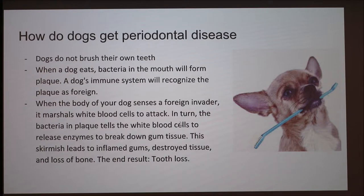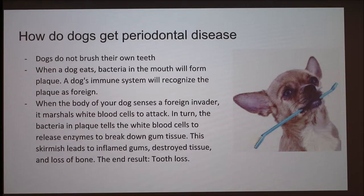How does your dog get periodontal disease? Our dogs don't brush their own teeth like we do. When a dog eats, the bacteria in the mouth will form plaque, and your dog's immune system will recognize the plaque as foreign. When the body senses a foreign invader, it marshals white blood cells to attack. In turn, the bacteria in plaque tells the white blood cells to release enzymes that break down the gum tissue, leading to inflamed gums, destroyed tissue, loss of bone, and ultimately tooth loss.